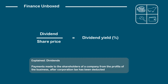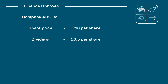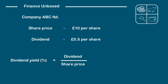Let's work through an example. We've got Company ABC Limited with a share price of £10 per share and a dividend of £0.50 per share, or 50p. The dividend yield is equal to 0.5 divided by 10, which equates to 0.05, or 5%. To get to the 5% you multiply 0.05 by 100.